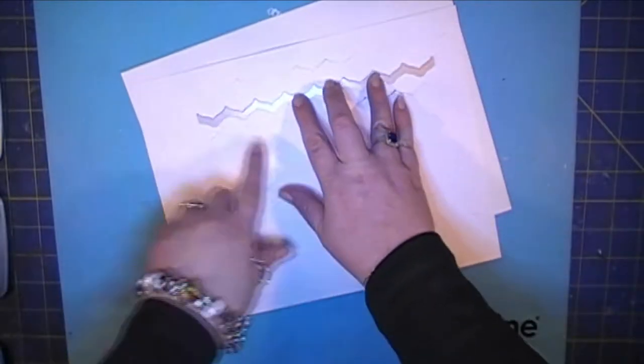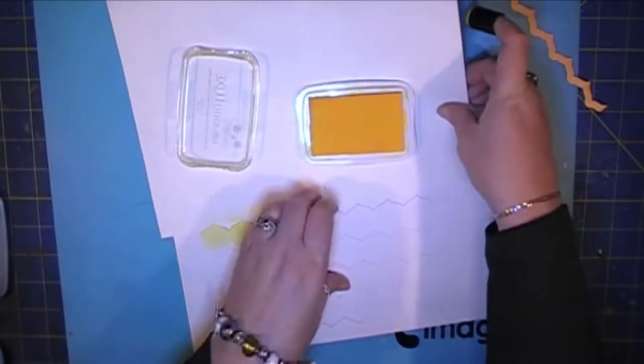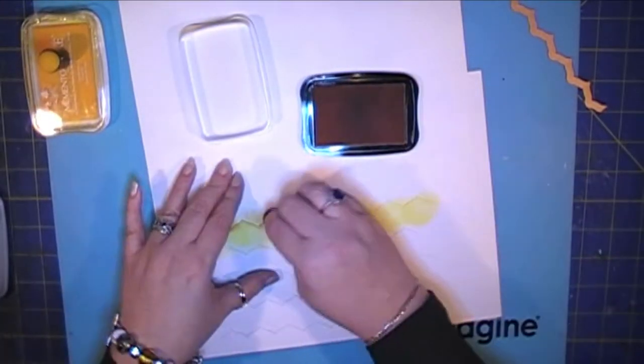Now I started with this kind of rounded scallop pointy thing and tie, and I've cut it down the page, offsetting it layer by layer.